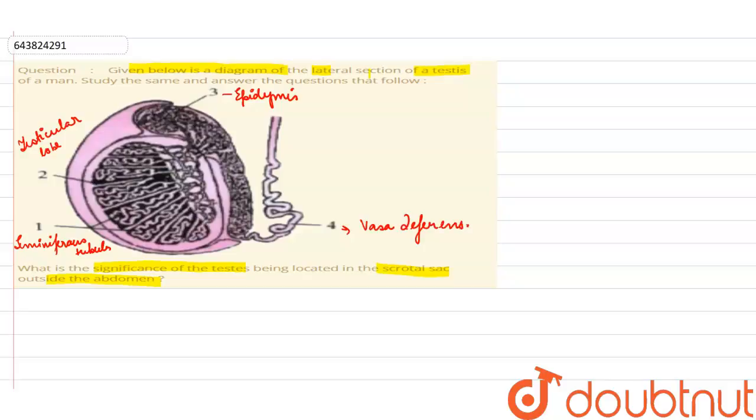Now the question asks, what is the significance of testis being located in the scrotal sac? During the embryonic life, what happens?